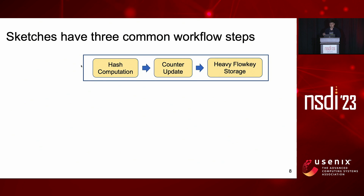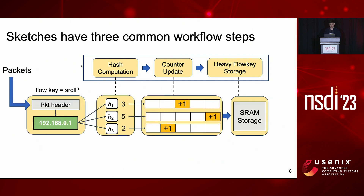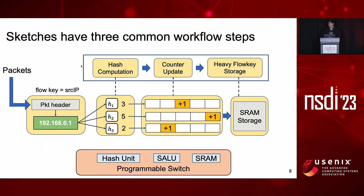Sketches have three common workflow steps: hash computation, counter-update, and heavy flow key storage. When a packet arrives, the sketch extracts the predefined flow key, such as source IP, from the packet header, and uses that flow key to perform hash computation. Then, using the hash value, it updates 2D counter arrays. Finally, if the flow key is identified as a heavy flow, it will be stored in SRAM storage. On the programmable switch side, there are three key hardware resources: hash units for hash computations, stateful ALUs (SLUs) for read and write operations to SRAM, and SRAM for memory space. Hash computation requires multiple hash unit allocations, while both counter-update and heavy flow key steps require SLU and SRAM allocations.